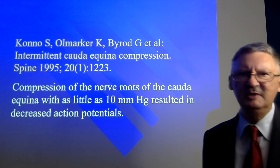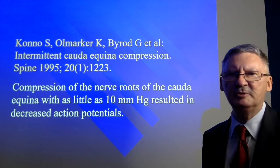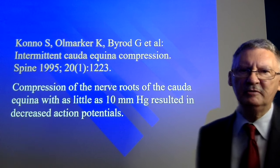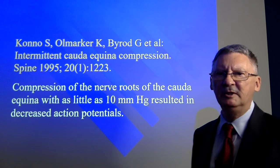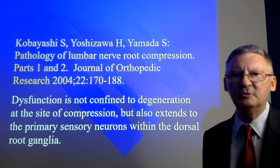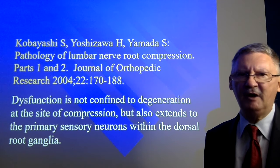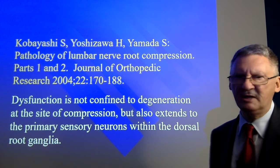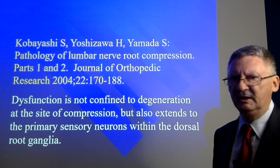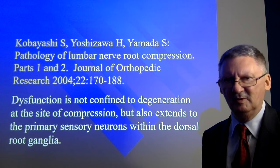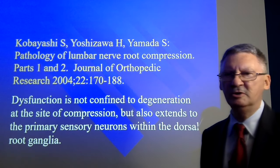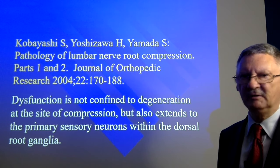Interestingly, 20 years later, Kano's team published a paper in Spine where they came up with exactly the same figure. They found that compression of the nerve roots of the cauda equina with as little as 10 millimeters of mercury resulted in decreased action potentials. Very interestingly, the dysfunction involved is not confined to degeneration at the site of compression, but also extends to the primary sensory neurons within the dorsal root ganglion. We've also seen clinically that nerve root compression may result in symptoms that are not of dermatomal distribution and are not confined to the segmental level of the compression.